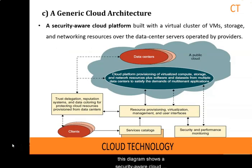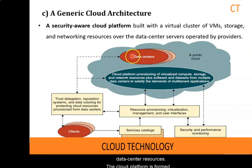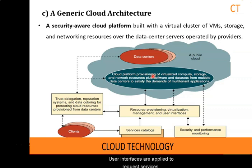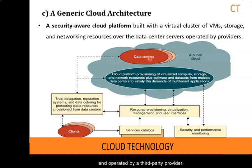This diagram shows a security-aware cloud architecture. The internet cloud is envisioned as a massive cluster of servers provisioned on demand to perform collective web services or distributed applications using data center resources. The cloud platform is formed dynamically by provisioning or deprovisioning servers, software, and database resources. The servers in the cloud can be physical machines or virtual machines. User interfaces are applied to request services. The provisioning tool slices out a cloud system to deliver the requisite service. In addition to building server clusters, the cloud platform demands distributed storage and accommodating services. Cloud computing resources are built into data centers typically owned and operated by third-party providers, and consumers don't need to know the underlying technologies.